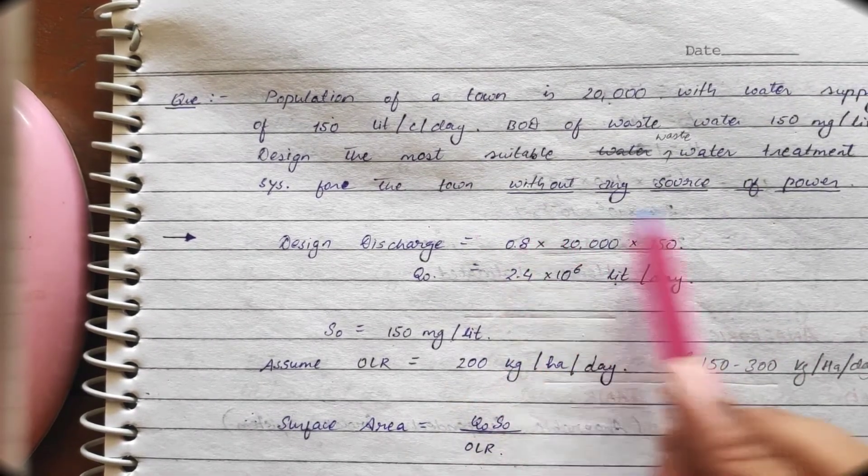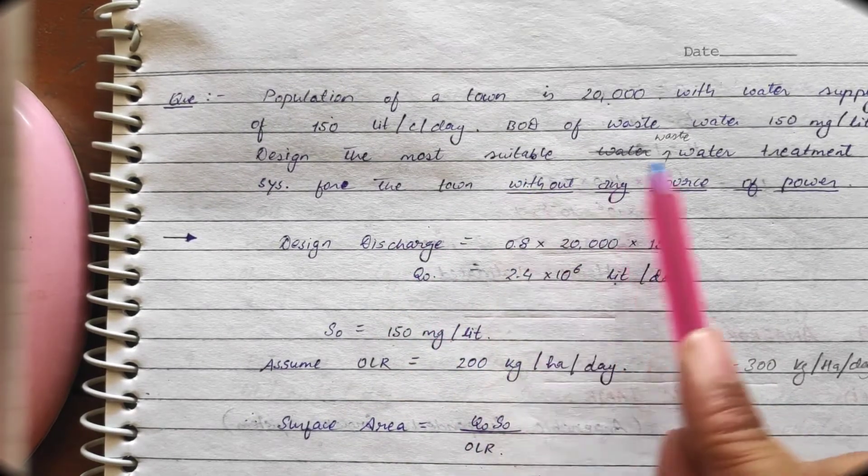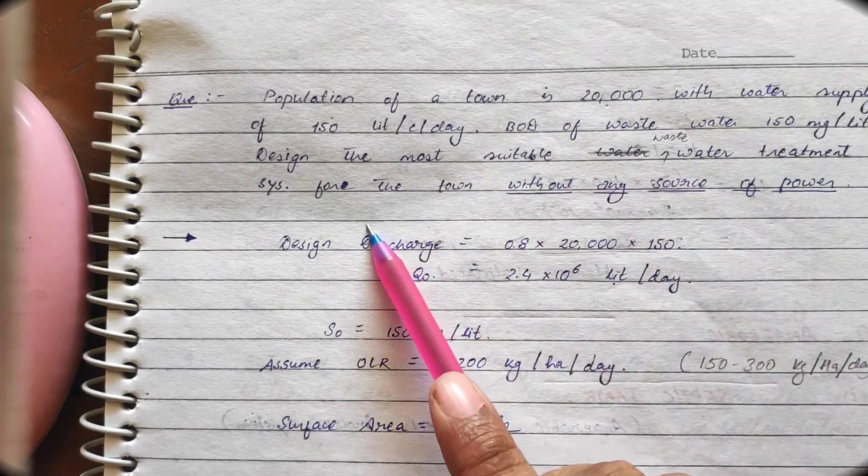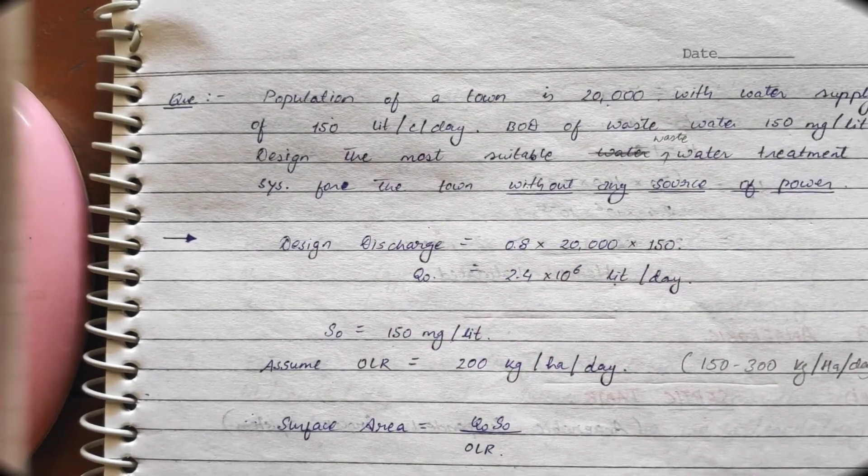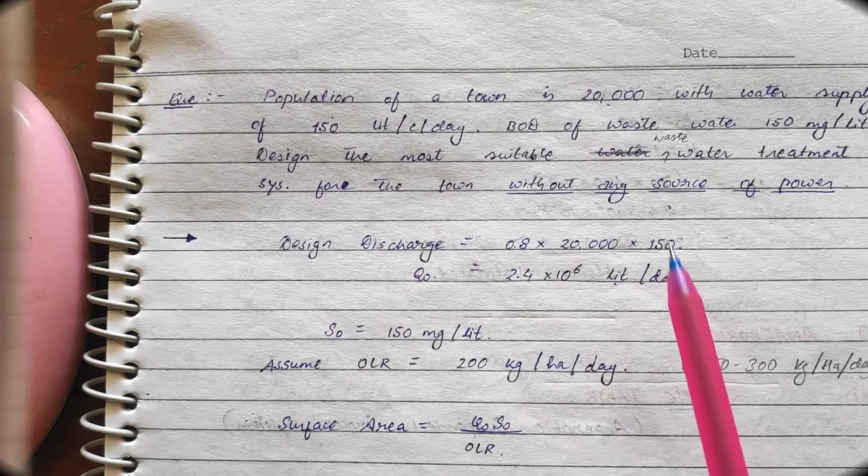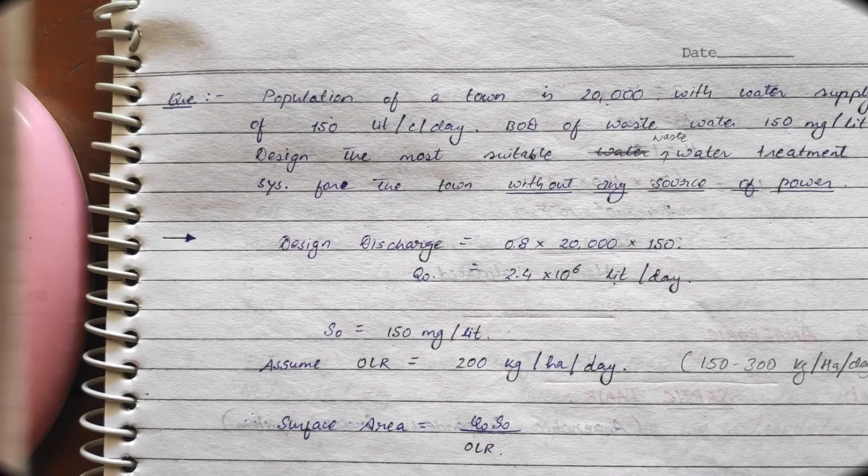So we have to understand from this statement, it has given we have to design the most suitable wastewater treatment for town without any source of power. Wherever there is no source of power then we have to design this oxidation pond which is also called as the stabilization pond.